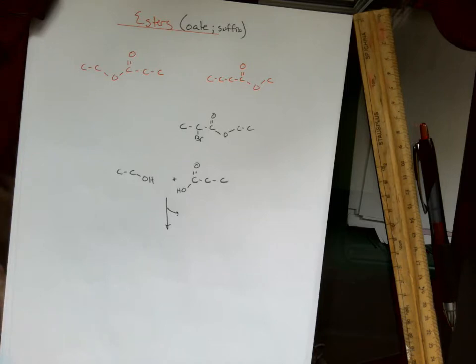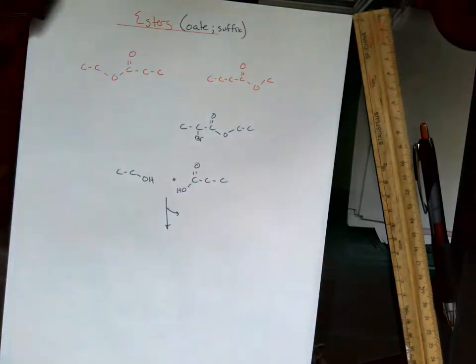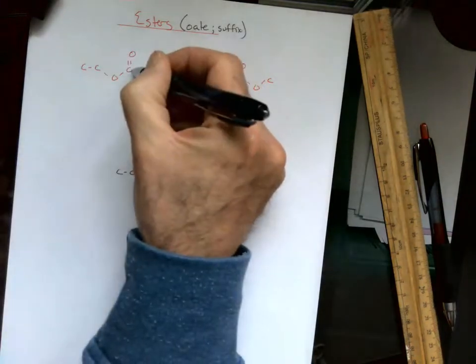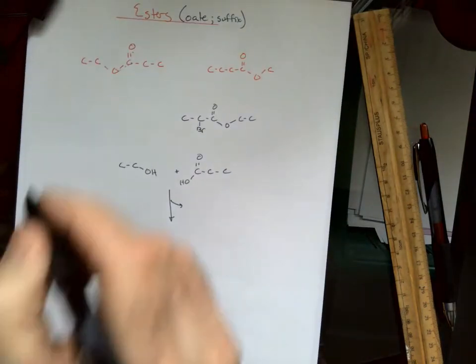The ending on an ester is called an -oate, and it is a suffix. The way you recognize it is it's a C double bonded to an O and a C single bonded to an O.